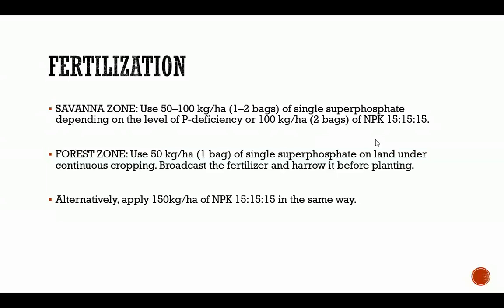For fertilization in savannah zones, it is advisable to use 50 to 100 kg per hectare of single superphosphate depending on the level of phosphorus deficiency, or 100 kg per hectare of NPK 15-15-15. In the forest zones, use 50 kg per hectare of single superphosphate on land under continuous cropping. Cowpea produces its own nitrogen, so the main nutrient of concern is phosphorus. Alternatively, 150 kg per hectare of NPK may be applied in the same way.